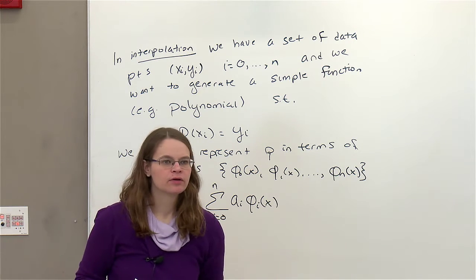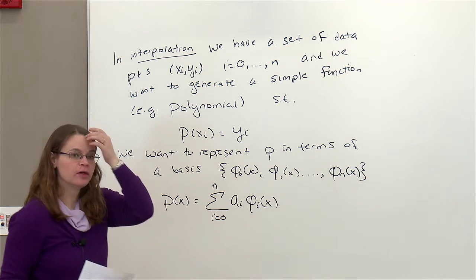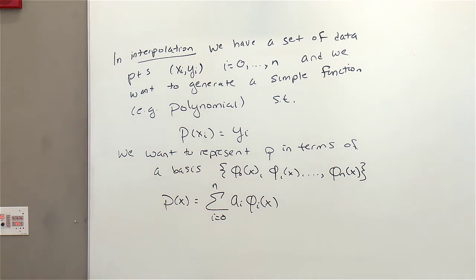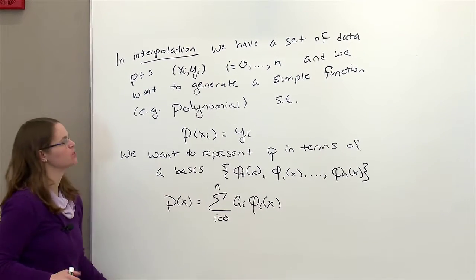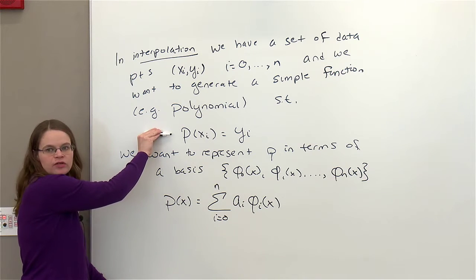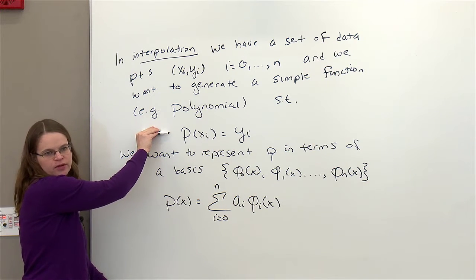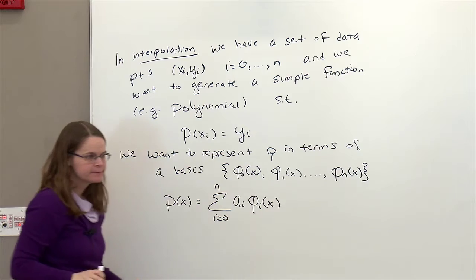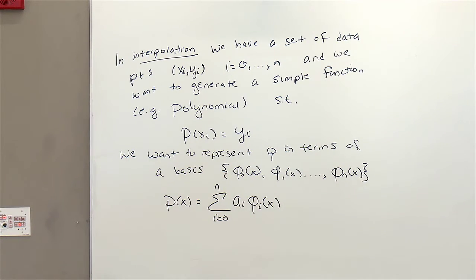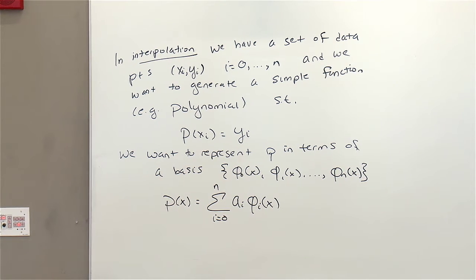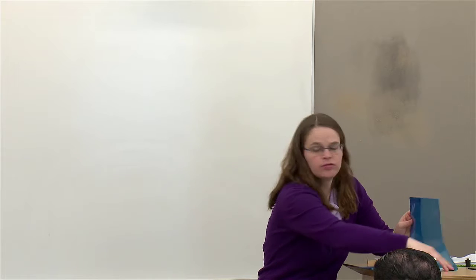We might want orthogonal polynomials, for example — there are different things we might try. Maybe our first question should be: is this really possible? What degree polynomial should I use? A student noted that when we did the Bernstein polynomials, we showed we could get arbitrarily close over the entire domain, but now we're just saying that at these data points the polynomial should match up. Yes — this is different from using Bernstein polynomials.